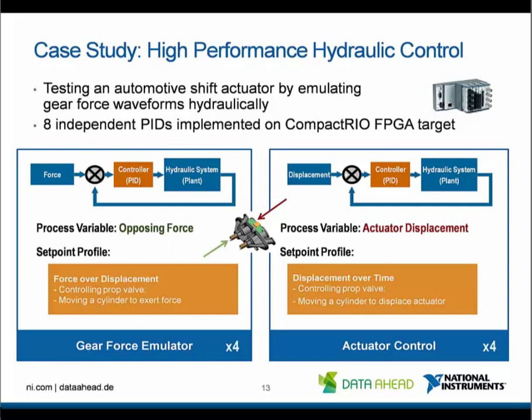On the left-hand side, we had to exert an opposing force that emulated the force of the actual gear. This also was an independent controller implemented on the Compact Rio FPGA target. Since we had four of each, we had altogether eight independent PID controllers implemented.